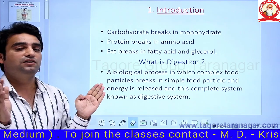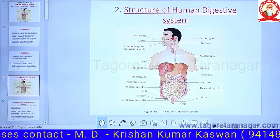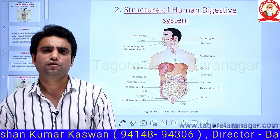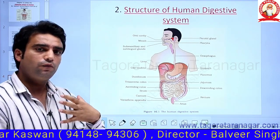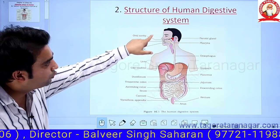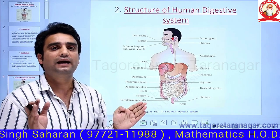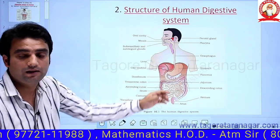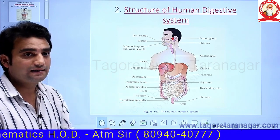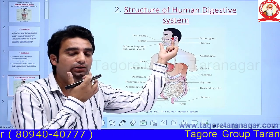This complete system in our body is known as the digestive system. In this chapter we have to study the digestion process and the digestive system. The second topic is the structure of the human digestive system. Inside the human body, where food is digested, a long, thick, and muscular tube is present — as you have seen in the diagram. This tube is known as the alimentary canal, and inside this alimentary canal our food is digested.